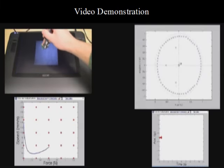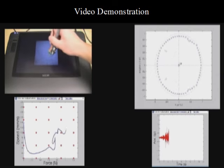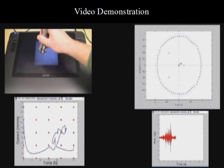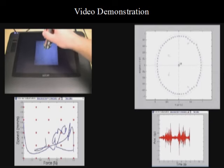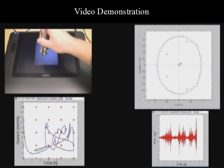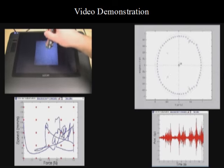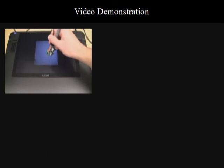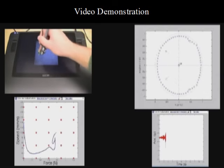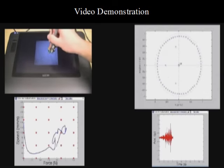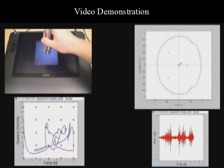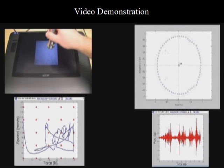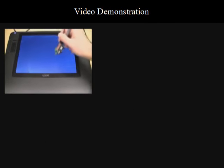We can see all of this happening in real time in a video demonstration. On the top left, the user freely explores the surface experiencing the texture as they would in the real world. On the bottom left, we see the user moving through the force-speed space in real time. On the bottom right is the real acceleration signal the user would be feeling during that trial. On the top right is the Z-transform pole plot of the H filter as we interpolate its coefficients in real time. We thank you for watching this video and look forward to discussing our work further.